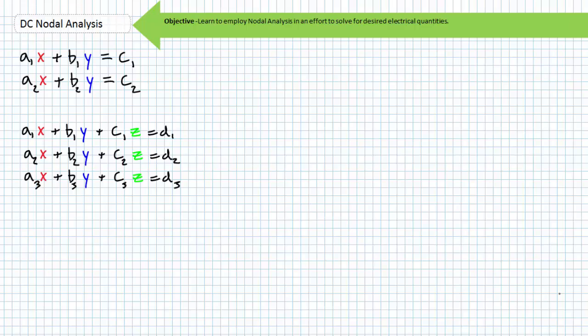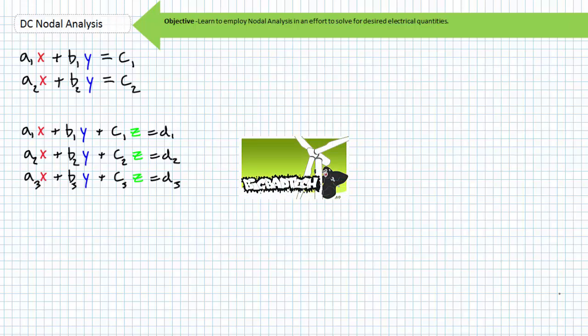Nodal analysis makes use of simultaneous linear algebra techniques to solve for equations with more than one unknown, where the unknown quantity being solved for is voltage at a particular node with respect to some previously agreed upon reference node. Voltage is a two-point measurement. Nodal analysis makes heavy use of Kirchhoff's current law, and this lecture operates under the presumption you are skilled in this technique. If you haven't watched the Kirchhoff's current lecture yet, take the time to do so now.